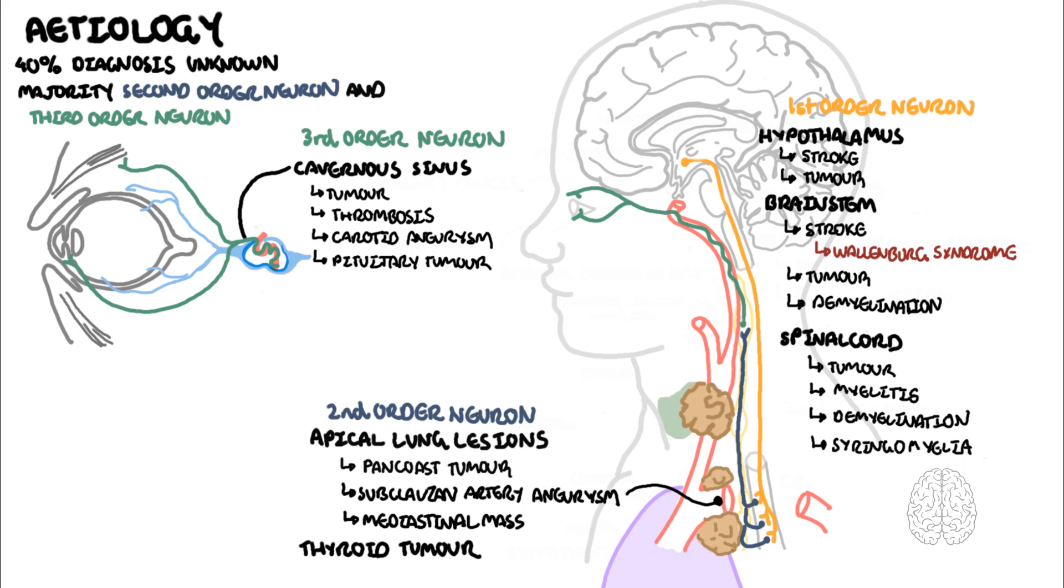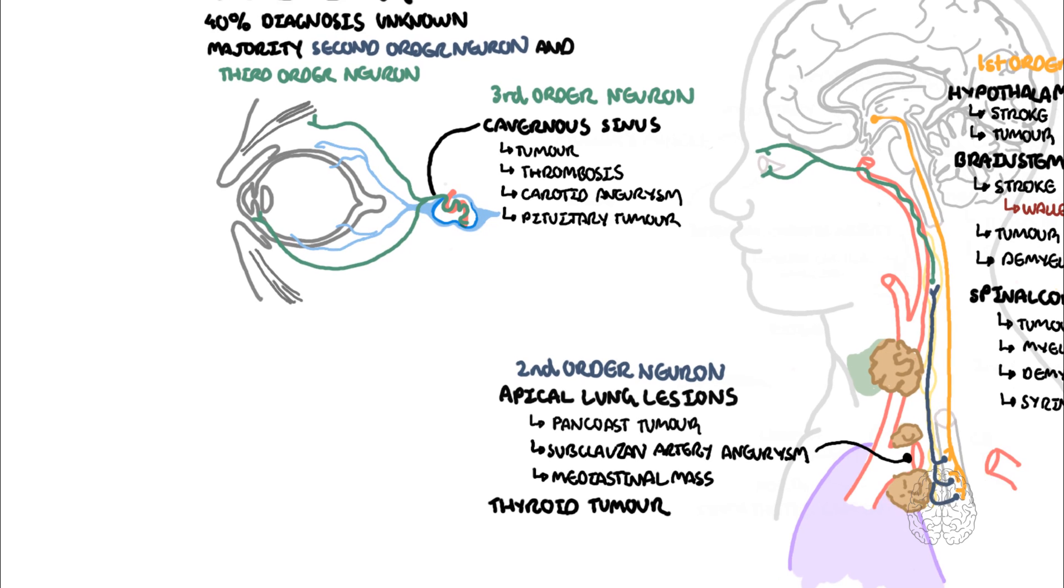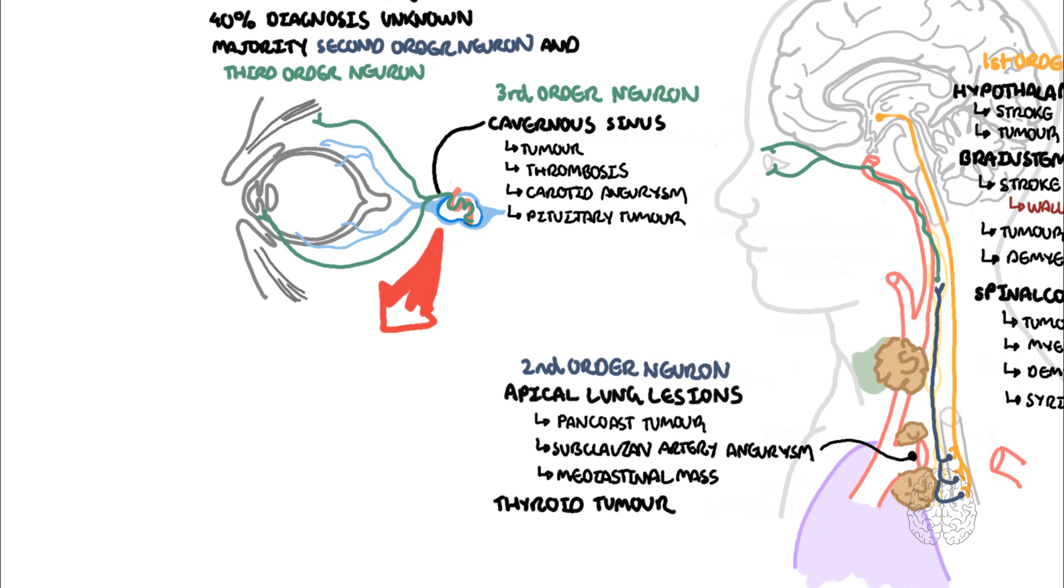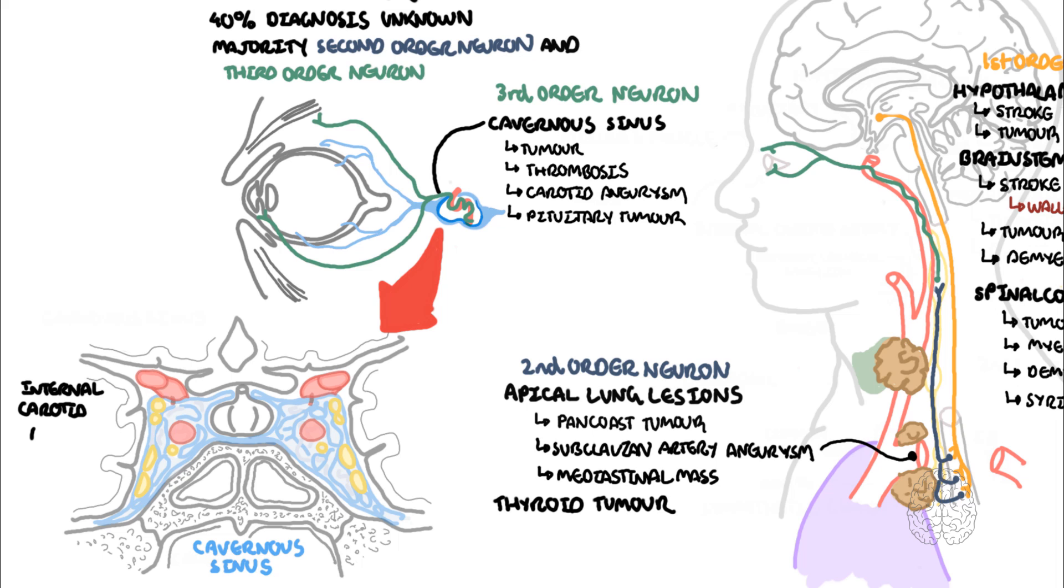The cavernous sinus is actually super important. It's a venous plexus which drains blood from the eye and surrounding structures. The cavernous sinus houses many cranial nerves, number 3, number 4, number 5, and number 6. The internal carotid artery passes through the cavernous sinus as well. Now, the pituitary gland is superior and close by.